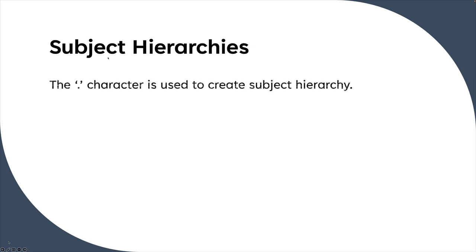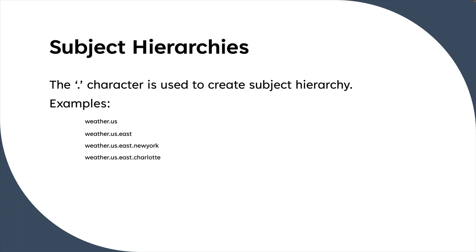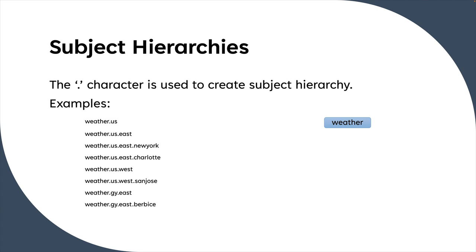When you use a dot in a subject name it creates what's called a subject hierarchy. For example, you might have subject names like 'weather.us', 'weather.us.east', 'weather.us.newyork', 'weather.us.charlotte', and so on. Those dots within the subject name create a hierarchy, and the way you can visualize this is by putting it in a hierarchical chart. At the top you would have 'weather', and then under it you would have 'us'.